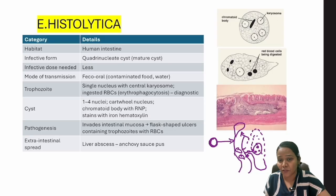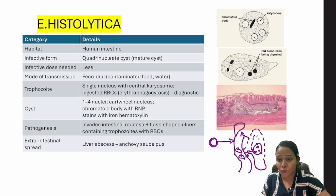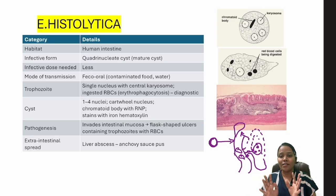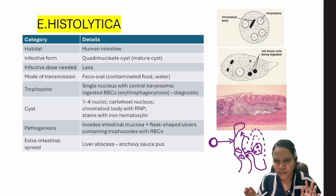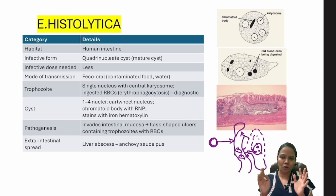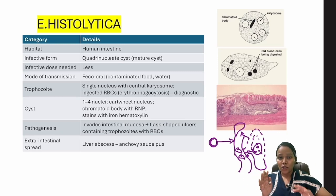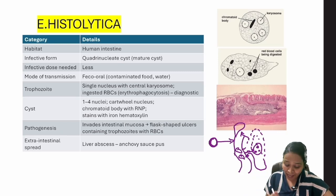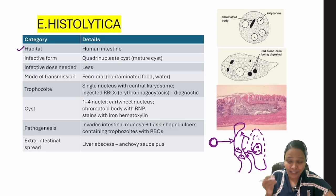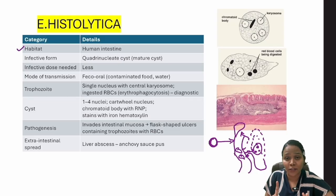Because the trophozoites erode and eat RBCs, they eventually enter blood vessels and travel to other organs like the liver, infecting it as well. If you understand this much, you are the master of Entamoeba histolytica — it's very conceptual. The habitat is the human intestine and the infective form is the cyst.